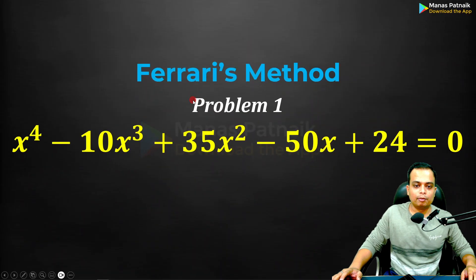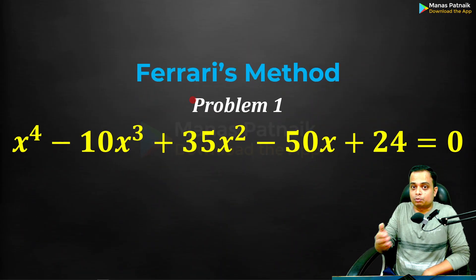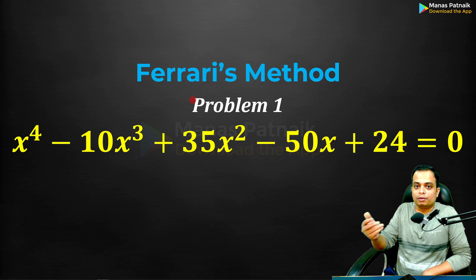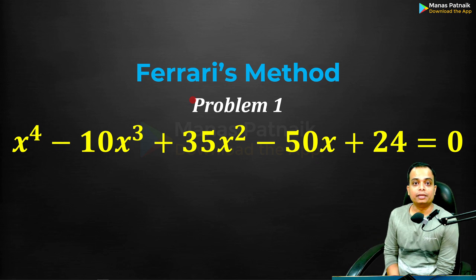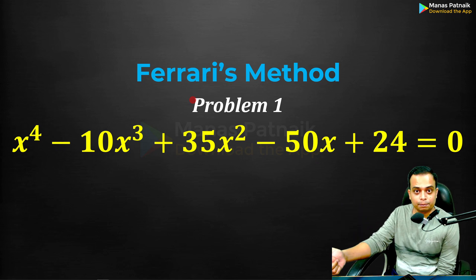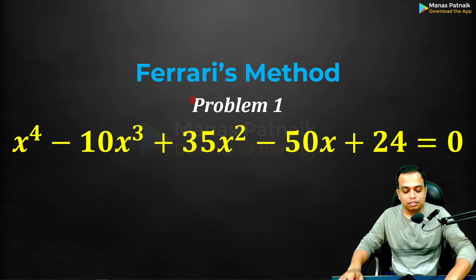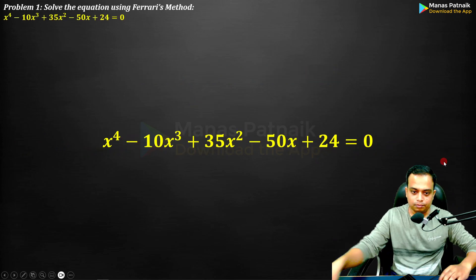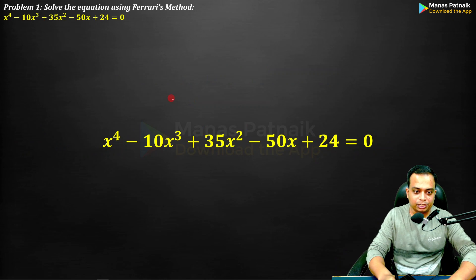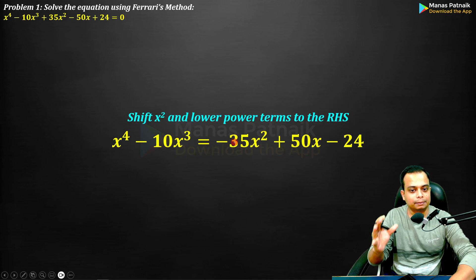Problem number one — Ferrari's method. These problems have been taken from Higher Engineering Mathematics by Dr. B.S. Grewal; the link is in the description. The first thing to do: make a division after x⁴, then shift all remaining terms towards the RHS so their signs change.